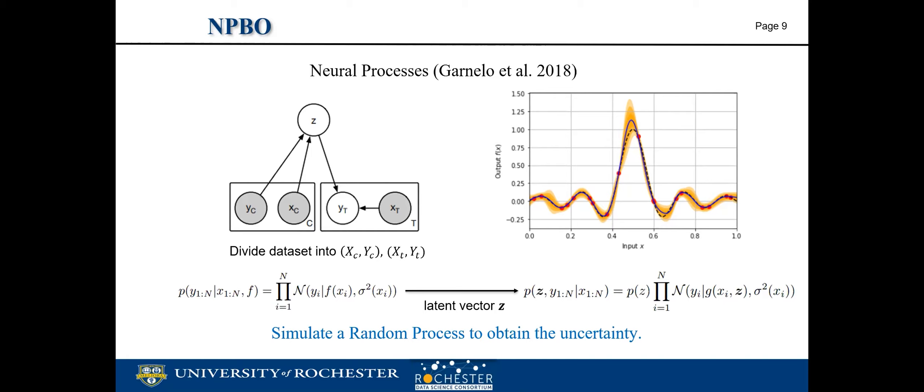We introduce a latent vector Z which could parameterize the stochastic process F, and then Fx changes to Fx given Z. For example, a Gaussian process is parameterized by its mean and variance. So ideally, if F is a Gaussian process, then Z should be the mean and the variance. Using the Bayesian rule, we can extract Z to the front.